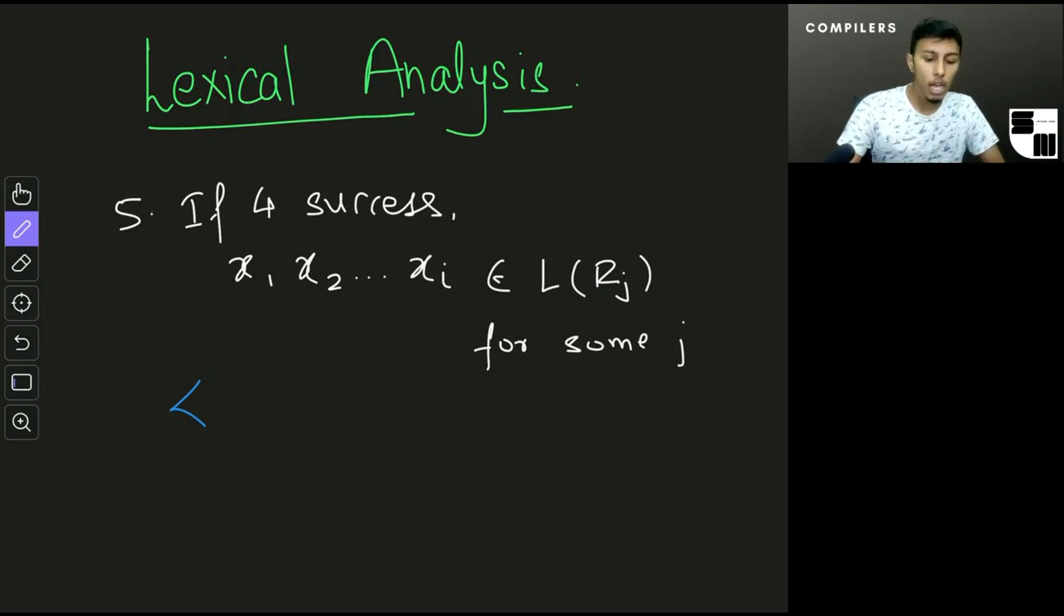So let's just assume that L of Rj is a keyword. So the token that we have constructed is that x1, x2 and so on up to xi is a keyword. So we have x1, x2 and so on up to xi and then keyword. So this is the token that we've created.